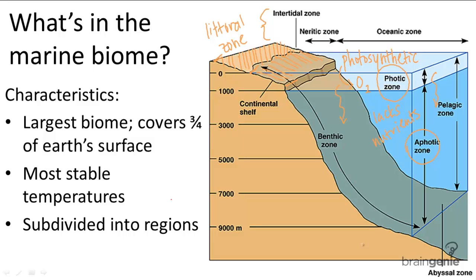Under the continental shelf is the pelagic zone, sometimes called open ocean. This encompasses the entire water column. There is a very low nutrient concentration because this zone mainly consists of the aphotic zone. But there are many different types of large aquatic animals, including fish, sea turtles, squids, dolphins, and other marine mammals.